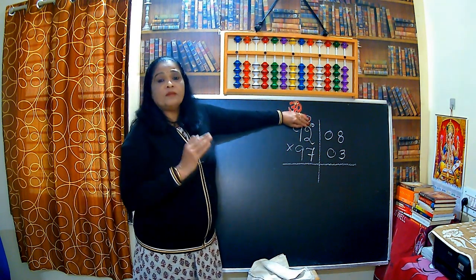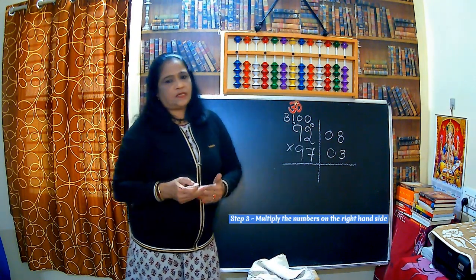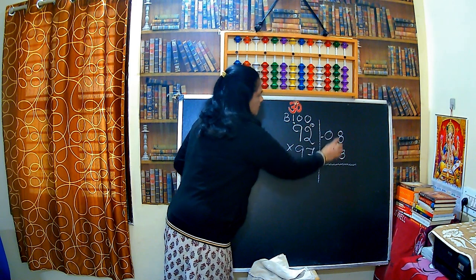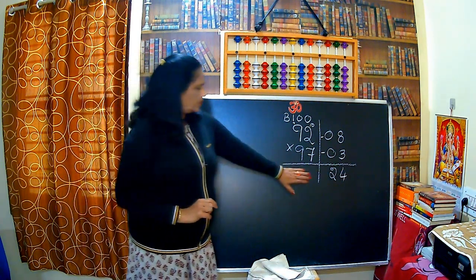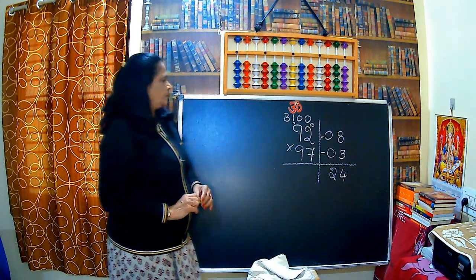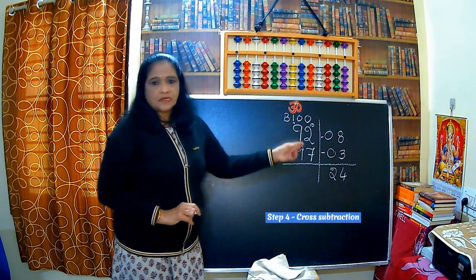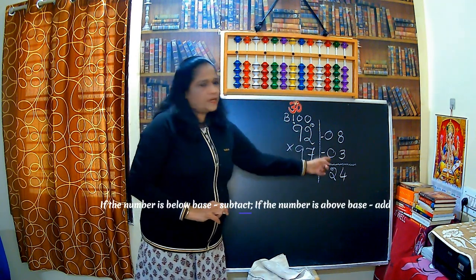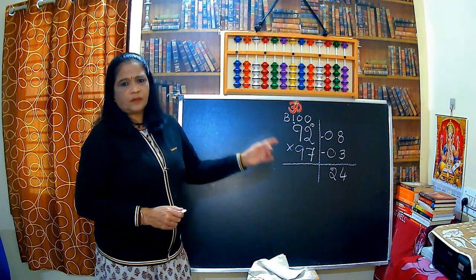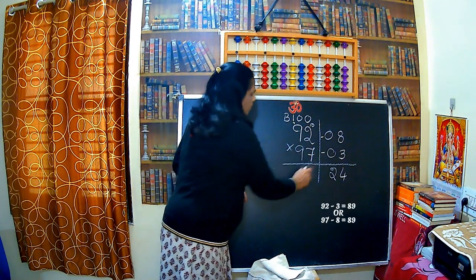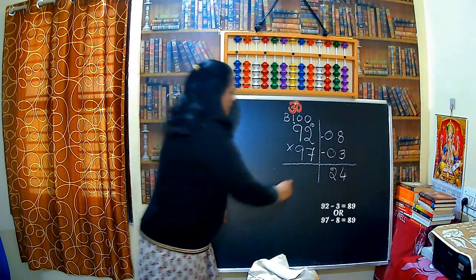So the right-hand side: multiply the two deficits, 8 and 3, which gives 24. For the left-hand side, we do a cross subtraction — not multiplication — because the numbers are below the base. If the number is below base, subtract the cross numbers; if above base, add the cross numbers. So 92 minus 3, or equivalently 97 minus 8, both give the same answer: 89.